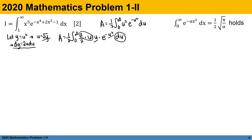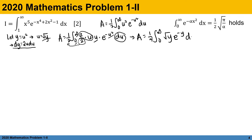For the limits of integration: when u equals 0, y equals 0, and when u equals infinity, y equals infinity. Extracting the 2 in the denominator outside, we have A equals one fourth integral from 0 to infinity of square root of y times exponential of negative y dy. From this expression, we can apply integration by parts, or IBP.